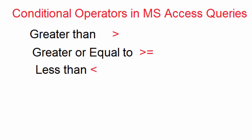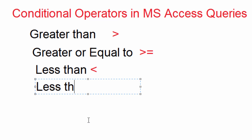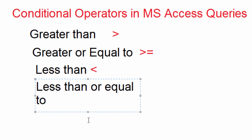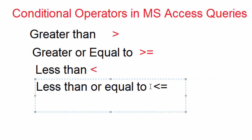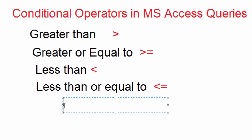Then the other one is what we call less than or equal to. This one is written with two symbols: one for the less than and another one for the equal. Here we are confirming if a certain value is equal to or less than a certain number. For example: check if marks is less than or equal to 49.